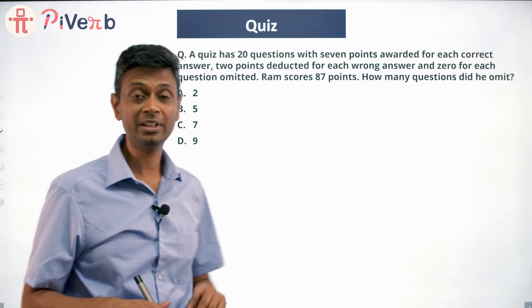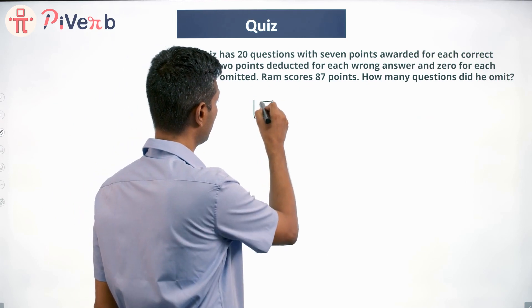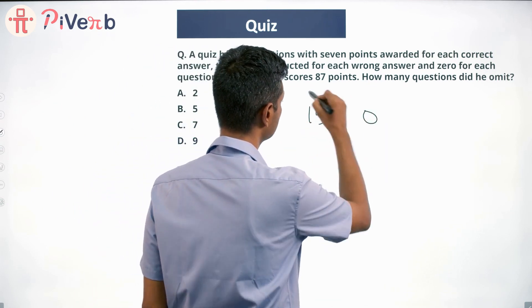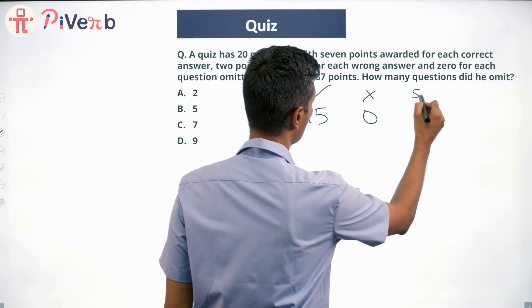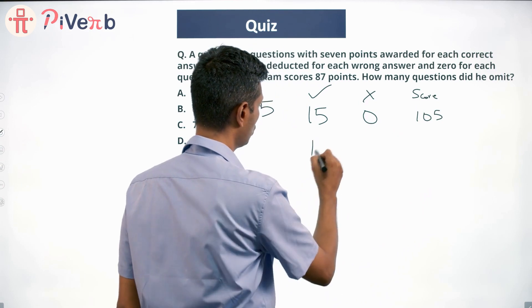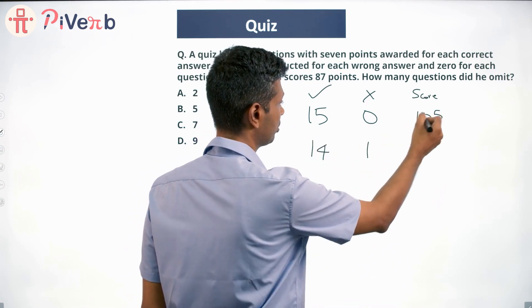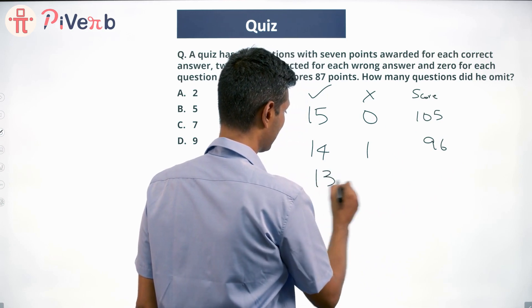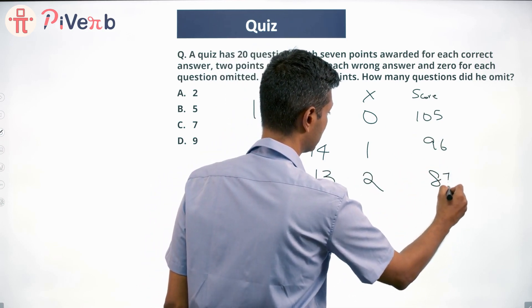So 15 questions he attempts. All 15 are right and zero wrong. Score would be 105. 14 right, one wrong, minus 9, 96. 13 correct, two wrong, minus 9, 87.